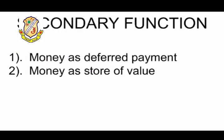Now we go to the secondary functions. Money can be paid as a future contract — money as deferred payment. For example, you buy a good today and want to pay in installments over a period of time. You pay the price of the good plus the interest for the months you are paying in installment. It becomes easy to calculate how much the price of the good and the rate of interest together amount to in future. So that drawback is overruled because money can easily be calculated as future or deferred payment.